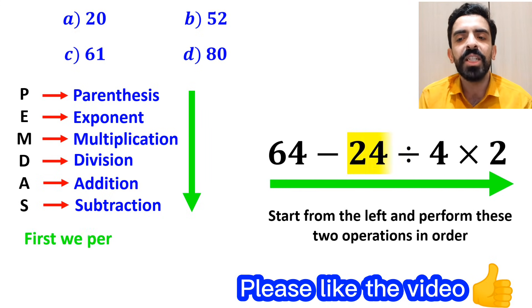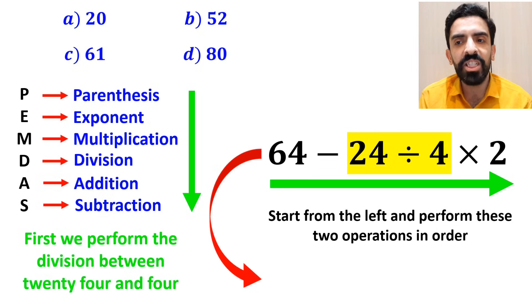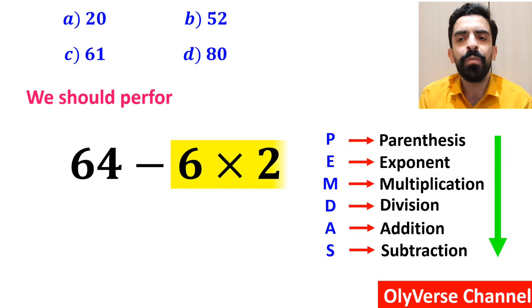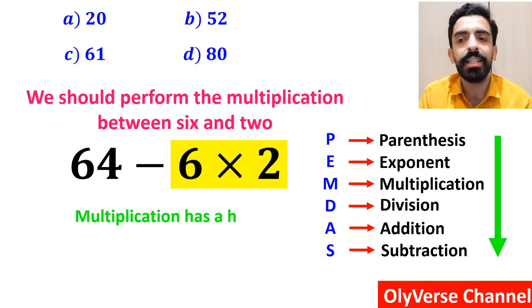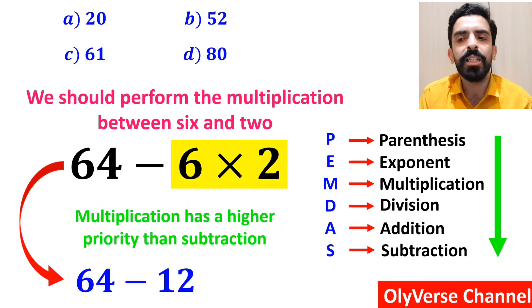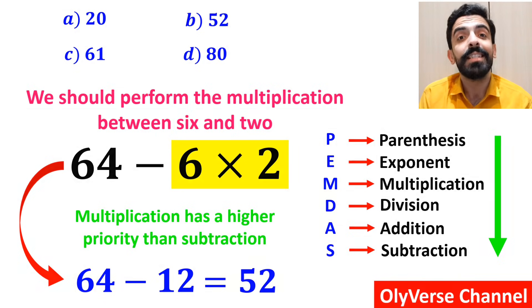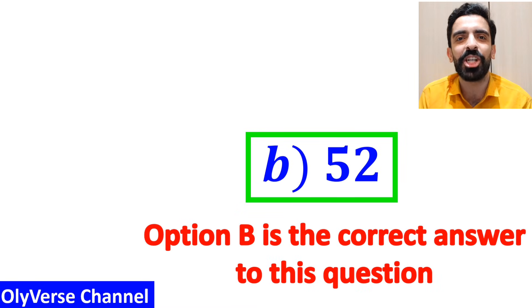So first we perform the division between 24 and 4. Instead of this expression, we can write 64 minus 6 times 2. In the final step, we perform the multiplication between 6 and 2, because multiplication has a higher priority than subtraction. This expression simplifies to 64 minus 12, and finally we get the answer 52. Option B is the correct answer to this question.